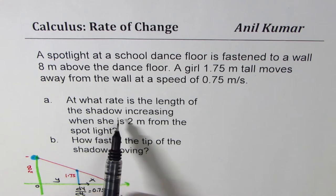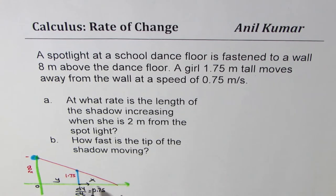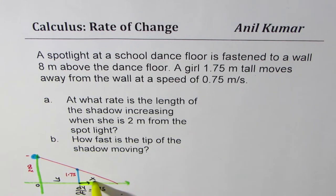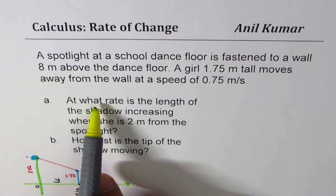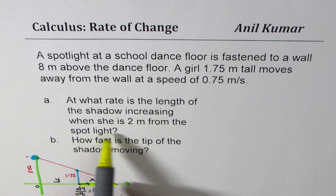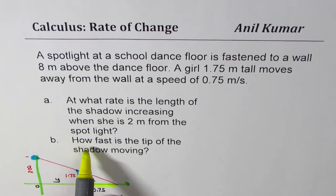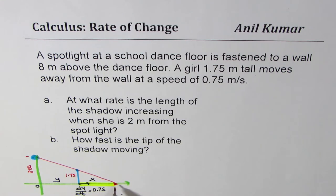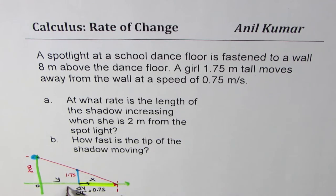At what rate is the length of shadow increasing? The shadow here is the distance X. We have to find dx/dt in this situation, when she is 2 meters from the spotlight. Part B asks how fast the tip of the shadow is changing — that is, this tip point. Let's call the total distance from the wall to the tip capital T, so the tip is capital T distance away.